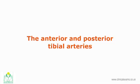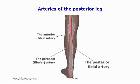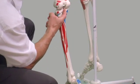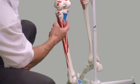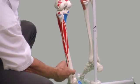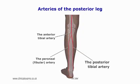The anterior and posterior tibial arteries: their origin is just below the popliteal crease, between the two heads of the gastrocnemius muscle. The popliteal artery gives off three branches: first the anterior tibial, then the posterior tibial artery, and then the peroneal artery.